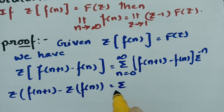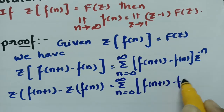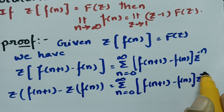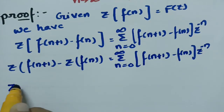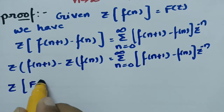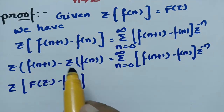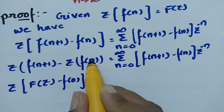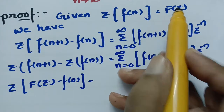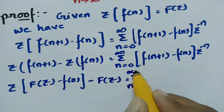This equals sigma from n equals 0 to infinity of [f(n+1) minus f(n)] into z to the power minus n. Applying the shifting theorem for f(n+1), which is a left shift by one unit, this becomes z into capital F(z) minus f(0), and capital F(z) is sigma from n equals 0 to infinity.